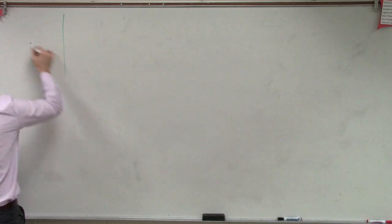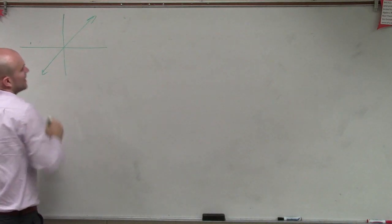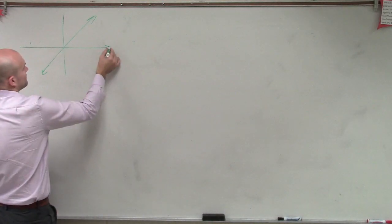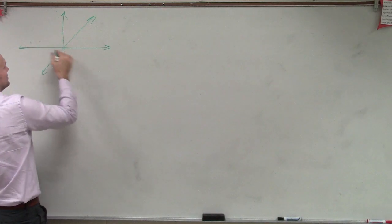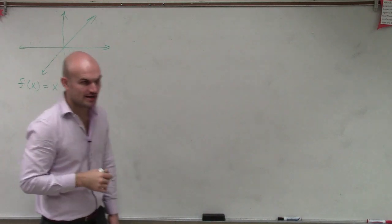So the first one we had was our linear equation, or the identity function. The identity function had something of f of x equals x.